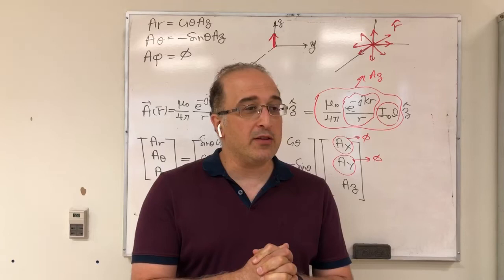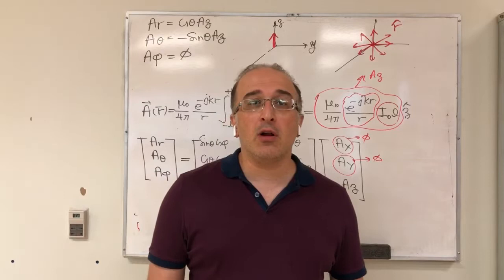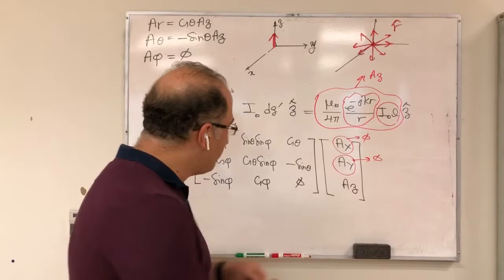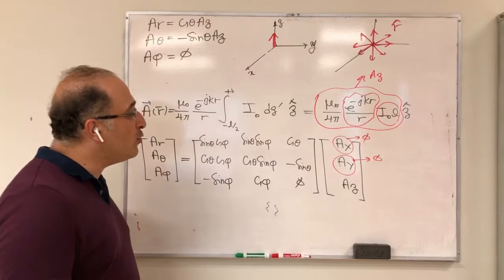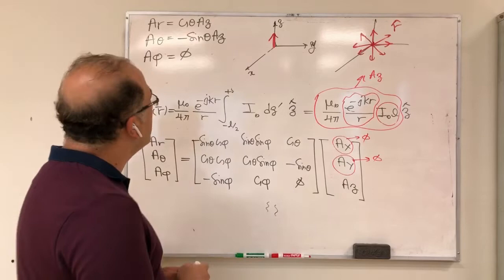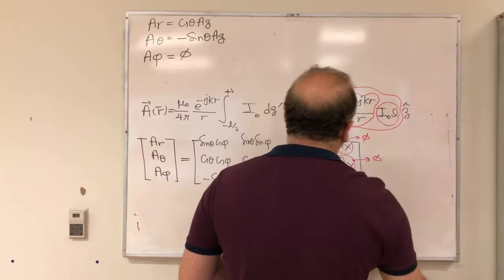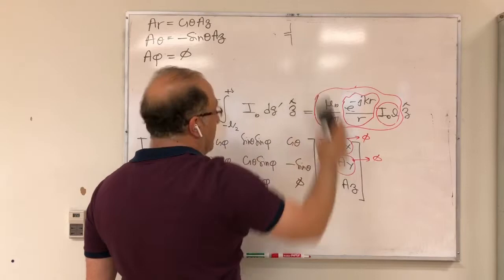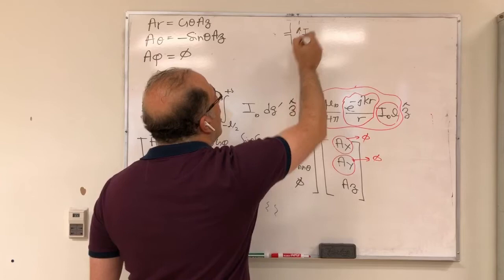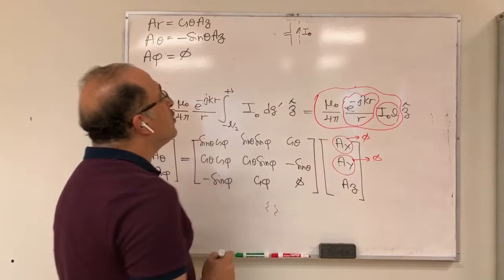Hello everyone. This is our next lecture continuing the previous lecture on magnetic vector potential for infinitesimal dipole antenna. I kept the last screen from the previous lecture so you can remind yourself about what happened. To remind you: I started with the current of an infinitesimal dipole antenna. I assumed the current is uniform along the dipole antenna — a uniform current, I₀.